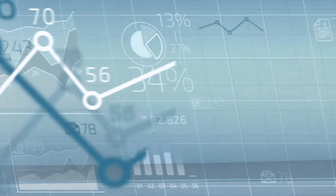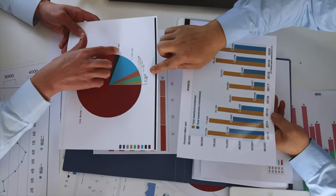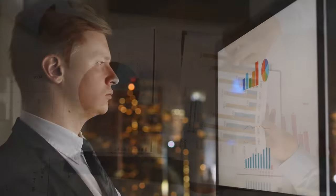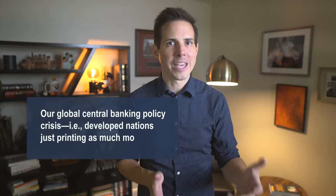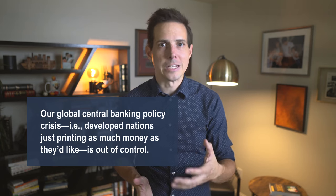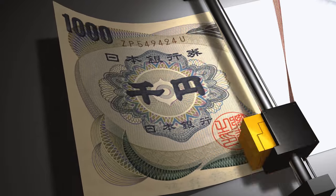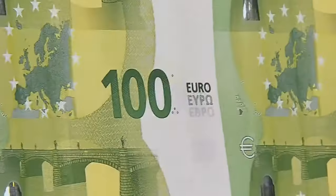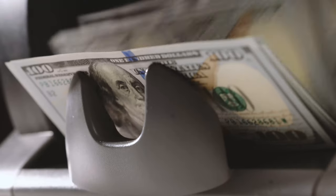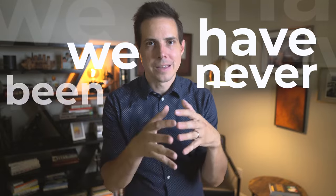Finally, let's consider in more detail one of these worrisome macroeconomic variables that we've never had to account for in quite the same way. It's in that same vein of concern Buffett presented in an earlier video in this series. The national debt. Our global central banking policy crisis, i.e. developed nations just printing as much money as they'd like, is out of control. More and more countries are printing more, spending more, and racking up more debt than ever before. I could go on listing off countless ways the market is different today than it ever has been at any point in the past, but I know you get the point at this point. We have never been here before.